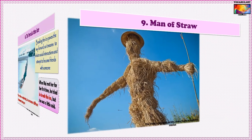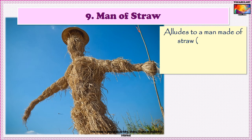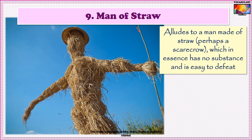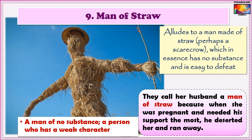Our ninth idiom is A man of straw. This phrase alludes to a man made of straw — like a scarecrow — which in essence has no substance and is easy to defeat. So the phrase 'a man of straw' means a man of no substance or a person who has a weak character. An example: They call her husband a man of straw because when she was pregnant and needed his support the most, he deserted her and ran away.